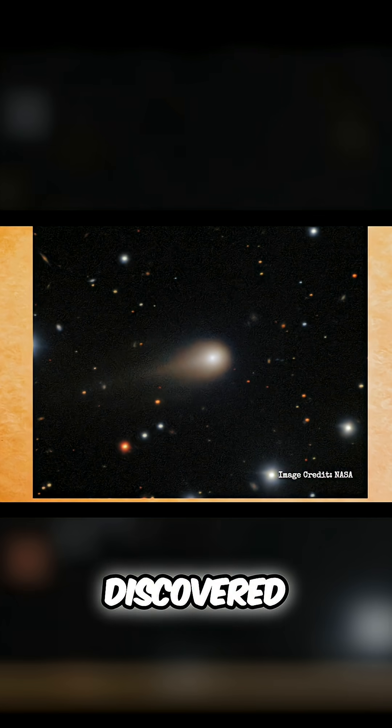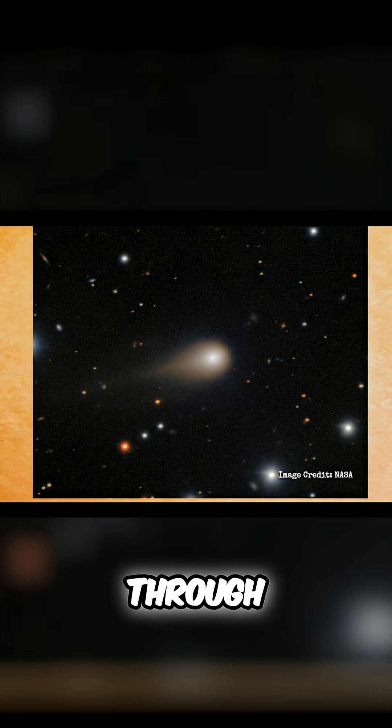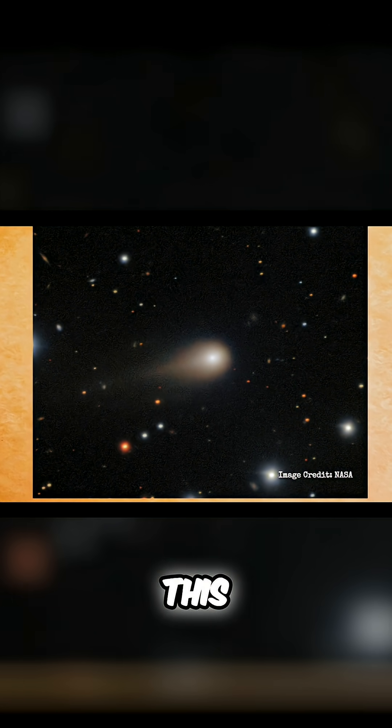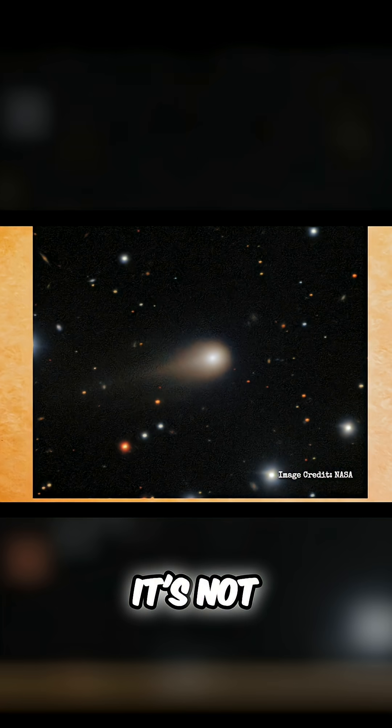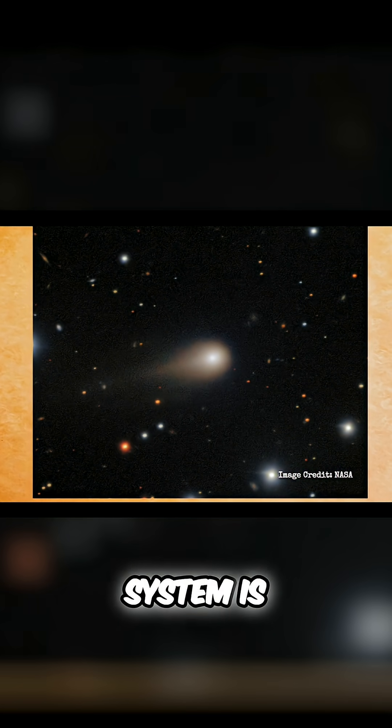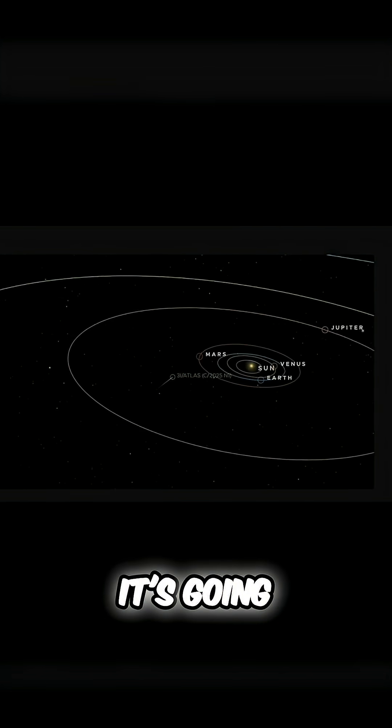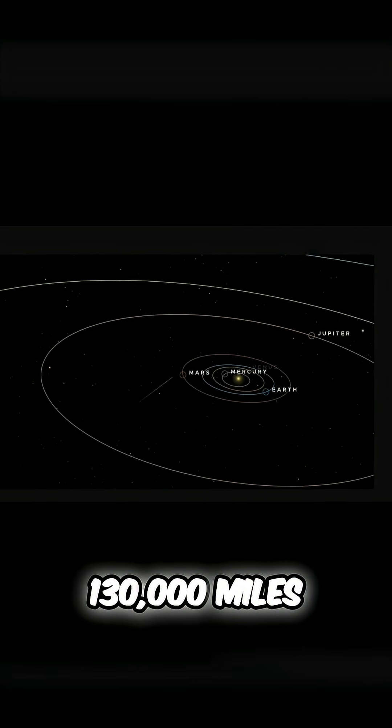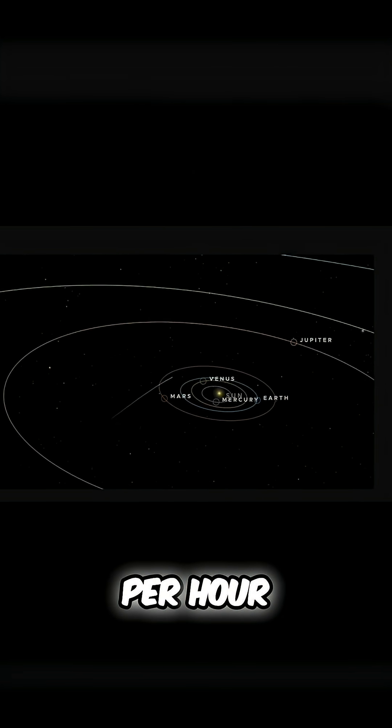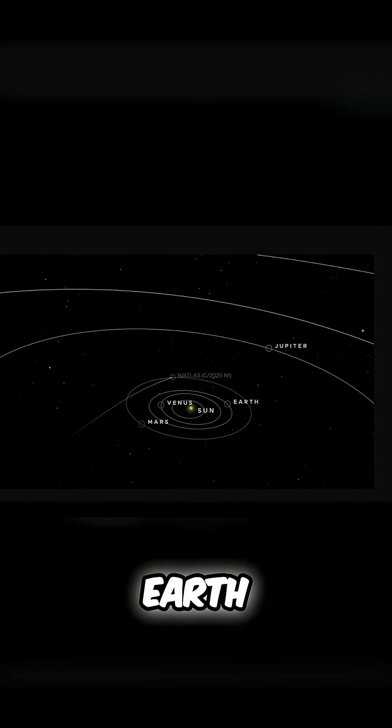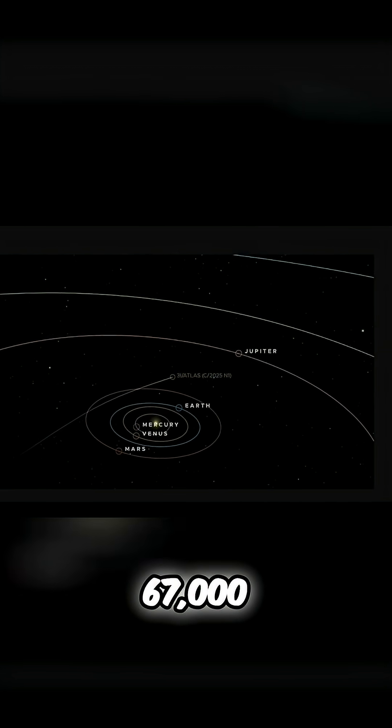This was discovered and it's hurtling through our solar system. The way you can know that it's not part of our solar system is that it doesn't have an elliptical orbit. It's going 130,000 miles per hour and for comparison, Earth travels at 67,000.